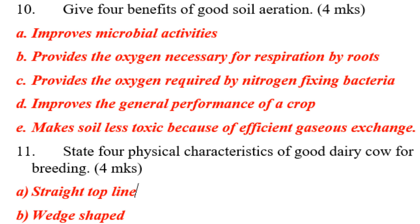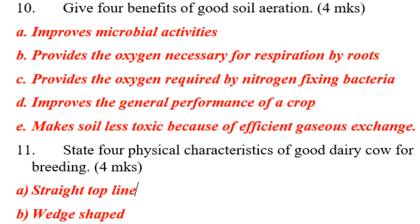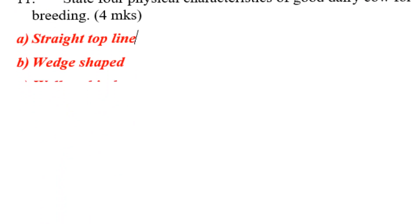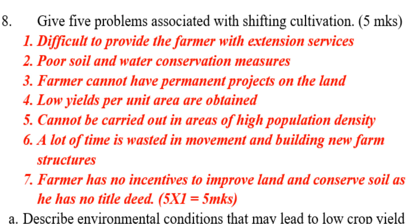Question number eleven: give four physical characteristics of a good dairy cow for breeding. Number one, it has a straight topline — at the back that line should be very straight. Number two, it is wedge-shaped. Those are some of the characteristics of a good dairy cow.